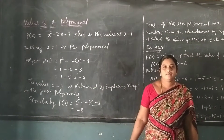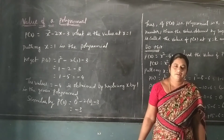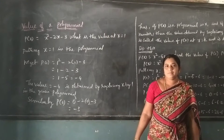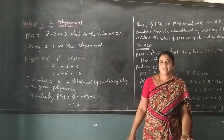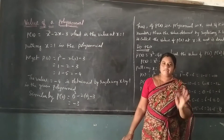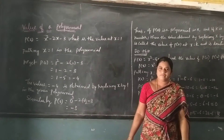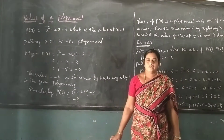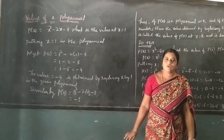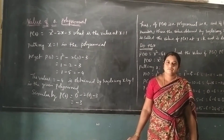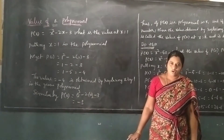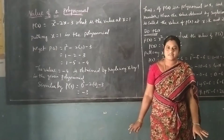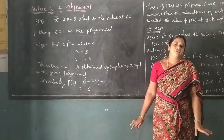Yesterday I covered the definition of the polynomial, the degree of the polynomial, and types of the polynomial. The degree of the polynomial is the highest power of the given polynomial — that is called the degree of the polynomial. Degree 1 is called a linear polynomial. Degree 2 is called a quadratic polynomial. Degree 3 is called a cubic polynomial, and so on.